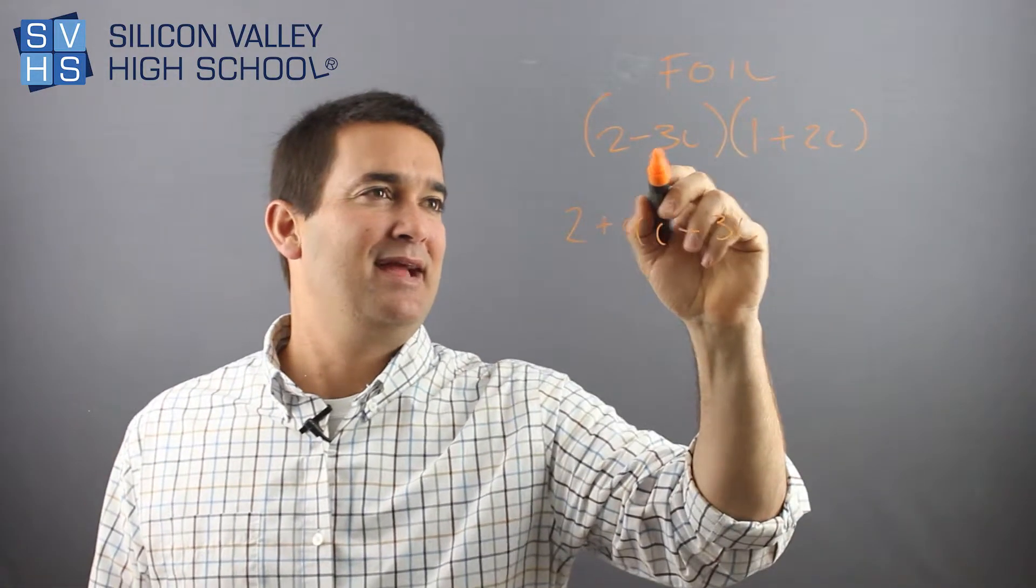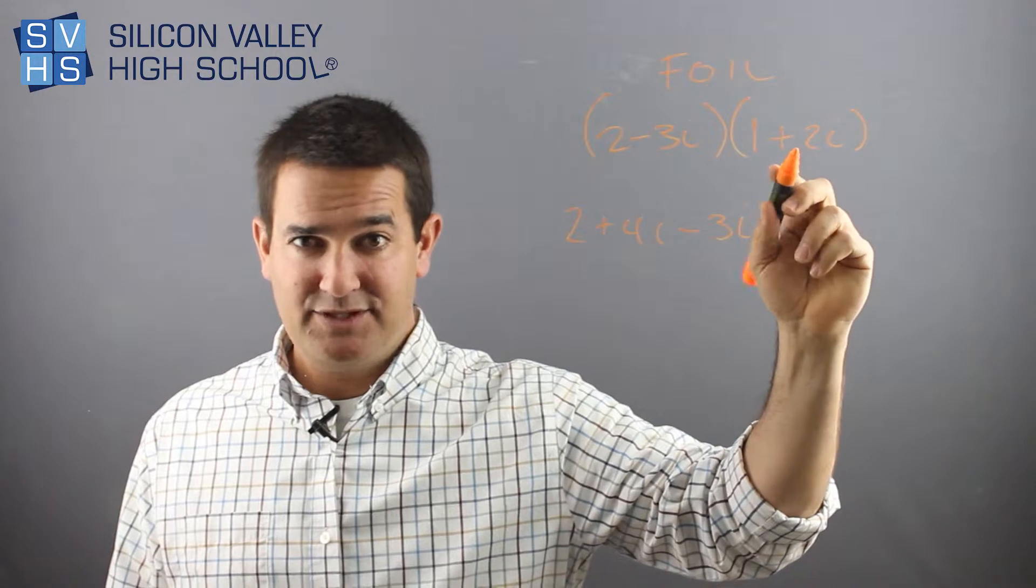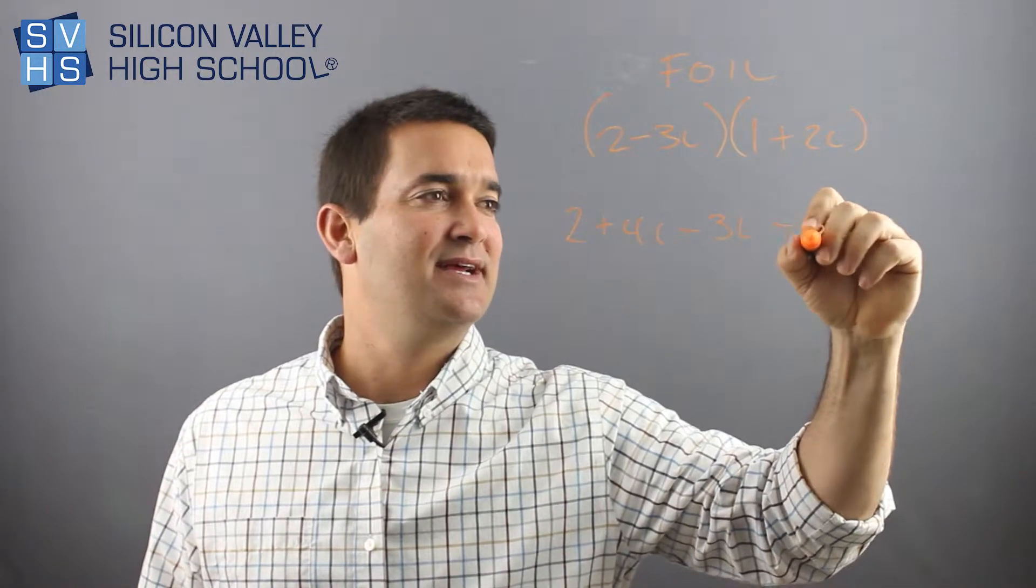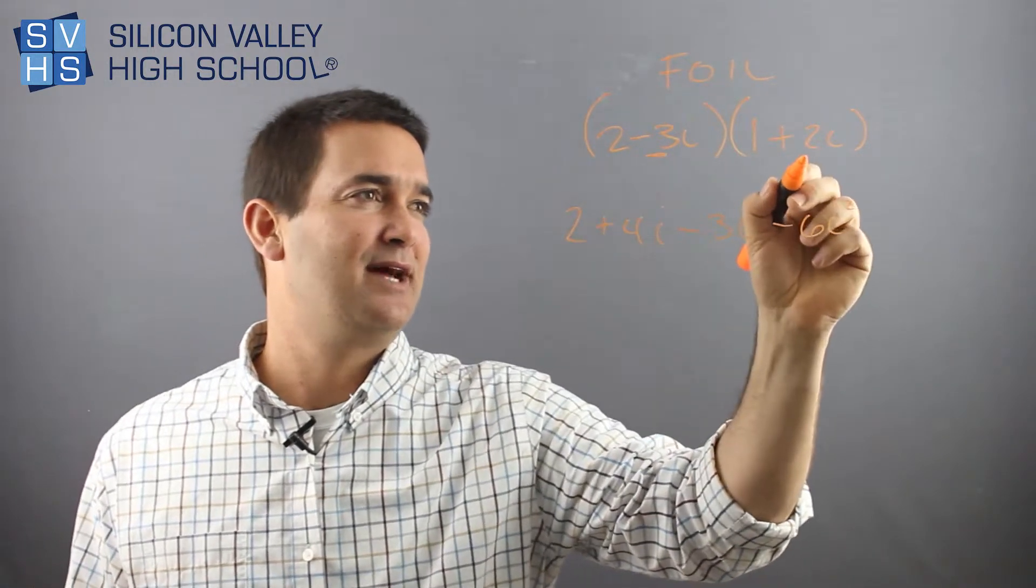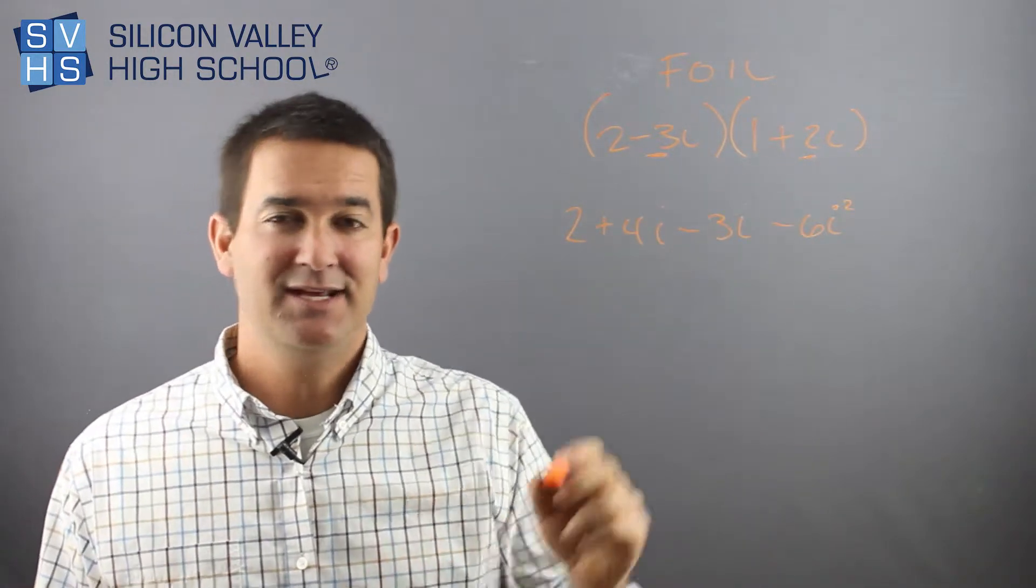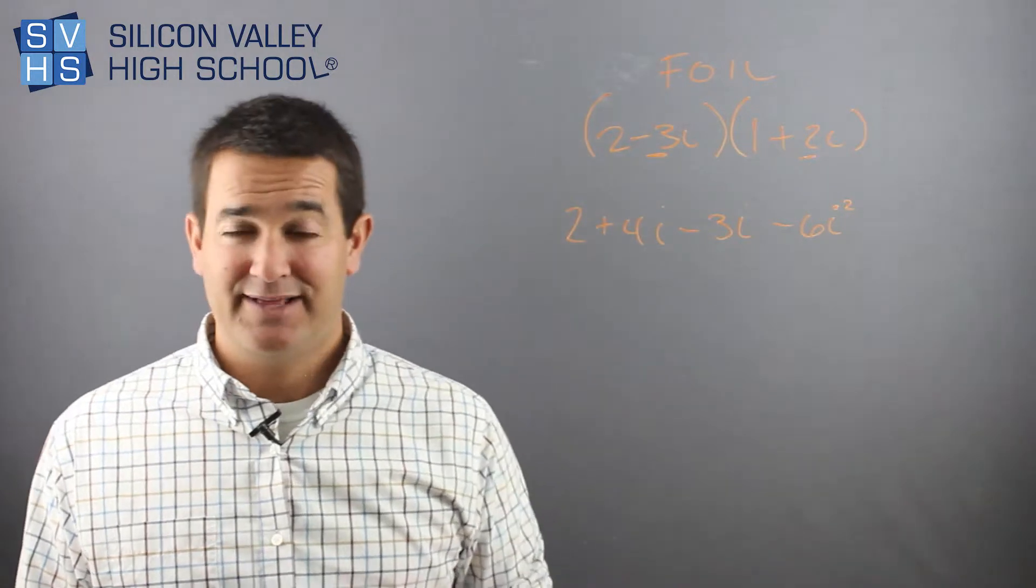This is the weird part. Remember, negative 3i times 2i is actually negative 6i squared. The i's do multiply, so you have negative 3 times 2, which is obviously negative 6, and then you have the i times the i, so that's i squared.